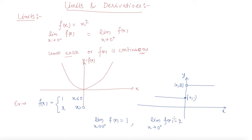Now I can say that the left hand limit and right hand limits are different. Hence, we say that the limit of f(x) as x tends to 0 does not exist. If these are equal, then we can say the limit exists, and if they are not equal, then we can say that the limit does not exist.